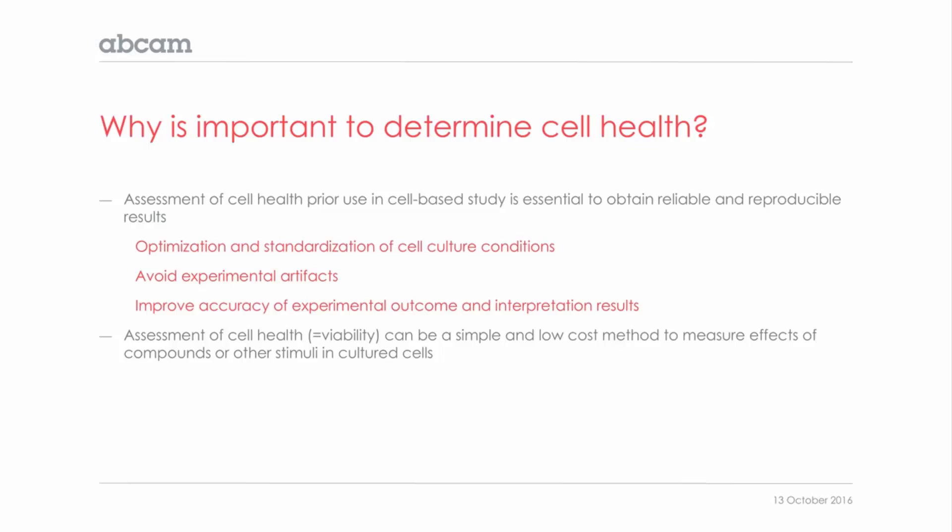Why is it important to look at cell viability? On one hand, it is essential before doing any cell-based assay to assess whether the cells you are going to use are healthy. The reason for this is to ensure that the results obtained from the experiment are both reliable and reproducible. Starting your experiment with healthy cells will help you to optimize and standardize cell culture conditions, to avoid experimental artifacts resulting from unhealthy cells, and to improve the accuracy of your results.